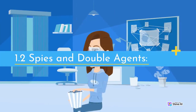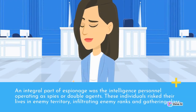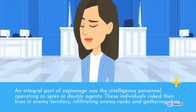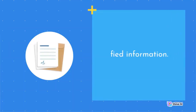Spies and double agents: an integral part of espionage was the intelligence personnel operating as spies or double agents. These individuals risked their lives in enemy territory, infiltrating enemy ranks and gathering classified information.